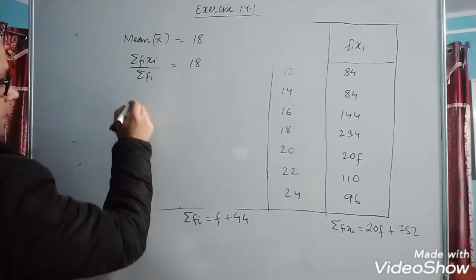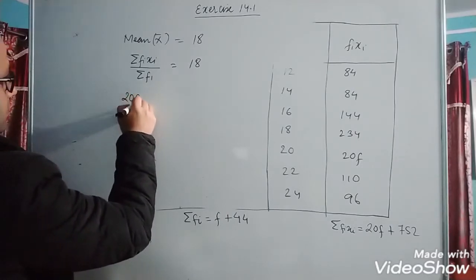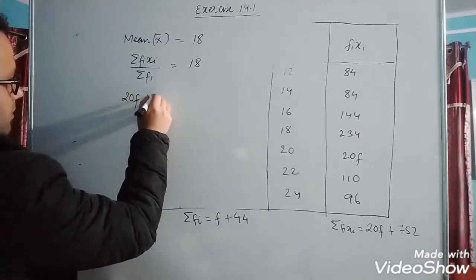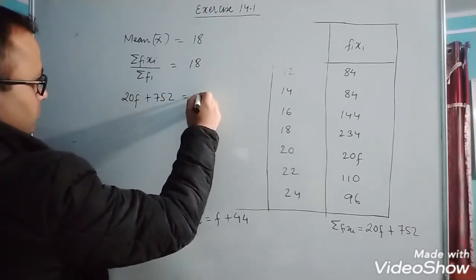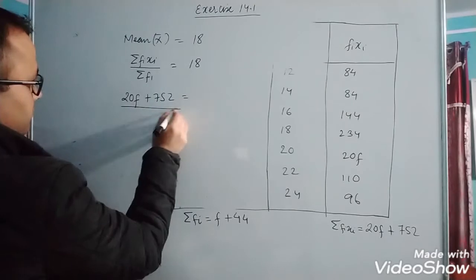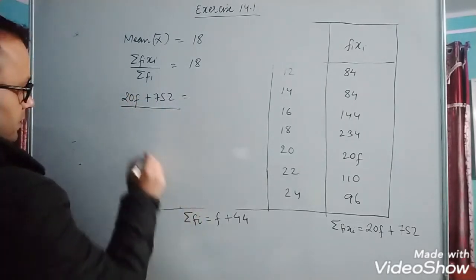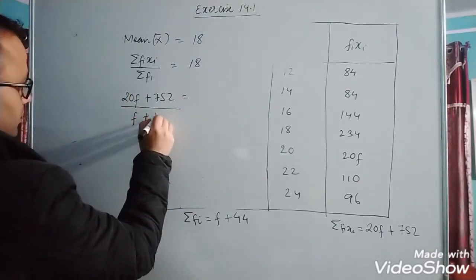Summation fi xi is 20f plus 752 divided by summation fi, which is f plus 44, equals to 18.